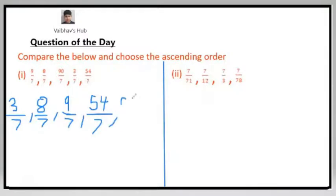In this ascending order, it is not always necessary to convert them into improper fractions. Now we solved the first question. The first question ascending order was 3 by 7, then 8 by 7, then 9 by 7 and 54 by 7, and then 90 by 7.